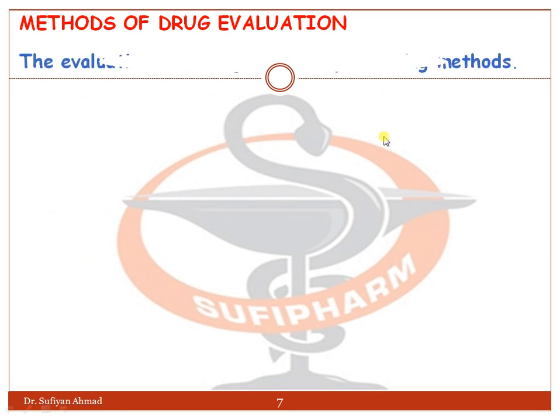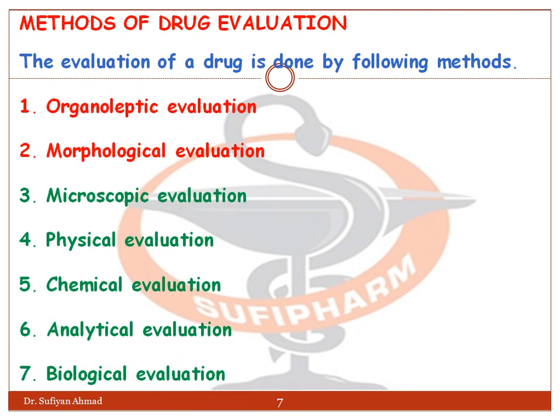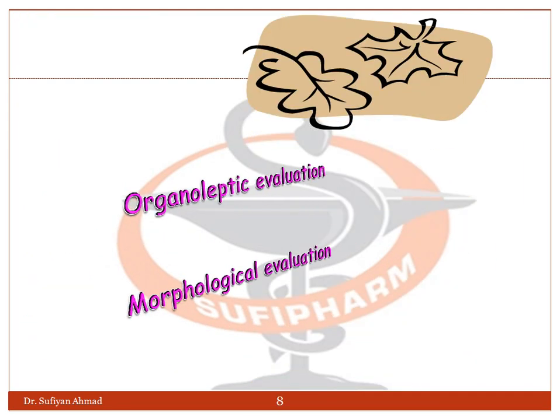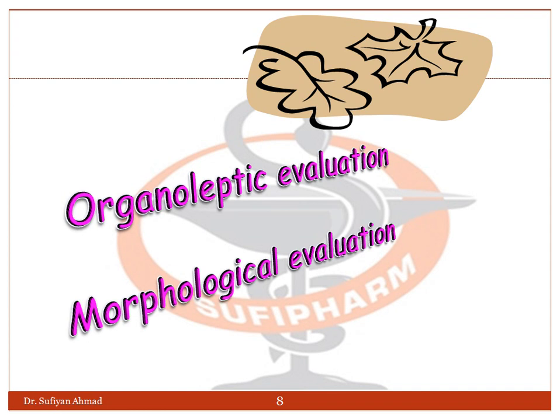The evaluation of drug is done by the following methods: organoleptic evaluation, morphological evaluation, microscopic evaluation, physico-chemical evaluation, chemical analytical evaluation, and biological evaluation. In this session, I will cover organoleptic and morphological evaluation.